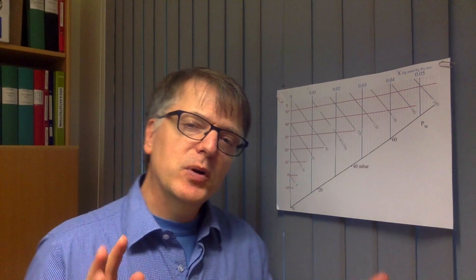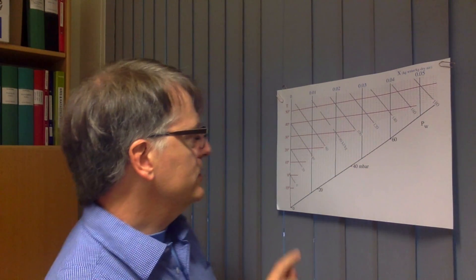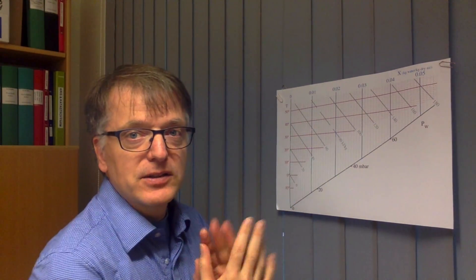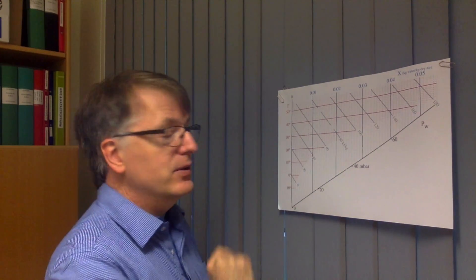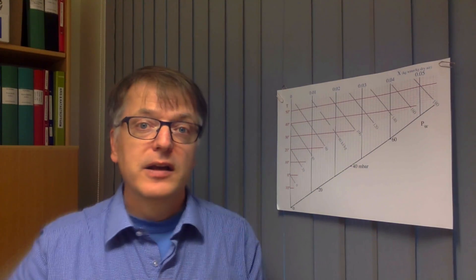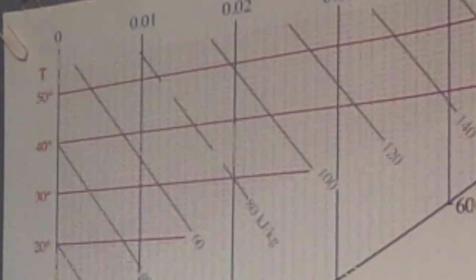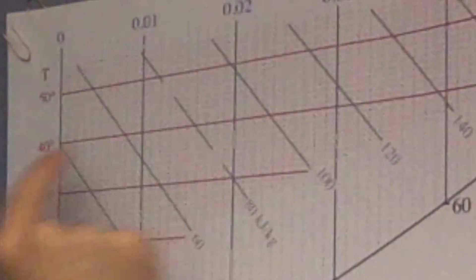And here we come to the reason why we had a slightly slanted system, not 90 degrees between the axes. And that's because we want to fit as much possible useful information in as small space as possible. And we choose to slant the axis such that the zero degrees centigrade line is a horizontal line.